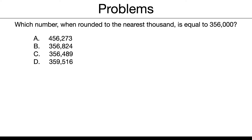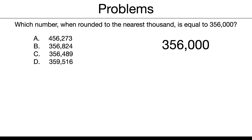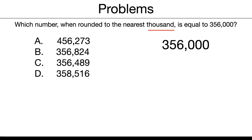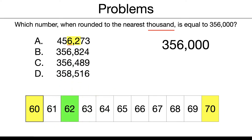Which number when rounded to the nearest thousand is equal to 356,000? This problem is a little bit tricky, so let's do this together. We want to write the number we have to round to — that's 356,000 — and we have to solve A, B, C, and D to see which one rounds to that number. Starting with A: underline our thousands, box it — 62 is going to round to 60 on the rounding chart. Left stays the same, right pops into zeros: 456,000. Is that 356,000? No, so that is not the correct answer. Let's try B: box it — 68 is going to round to 70. The 35 stays the same on the left and the 24 pops into zeros: 357,000. That's closer, but it is still not 356,000.